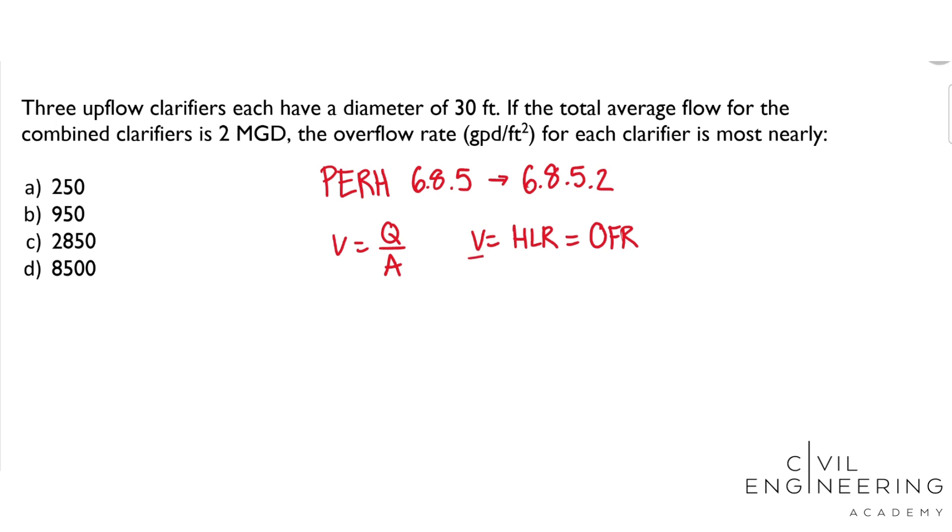So this V is what we're looking for. We need Q and we need A, and that's what our units are in, gallons per day per area. So the first thing we're going to do is find the flow per clarifier because we are asked for the overflow rate for each clarifier. So we have flow per clarifier, and that is going to equal the 2 million gallons per day total over 3 clarifiers, and we get 0.667 million gallons per day per clarifier.